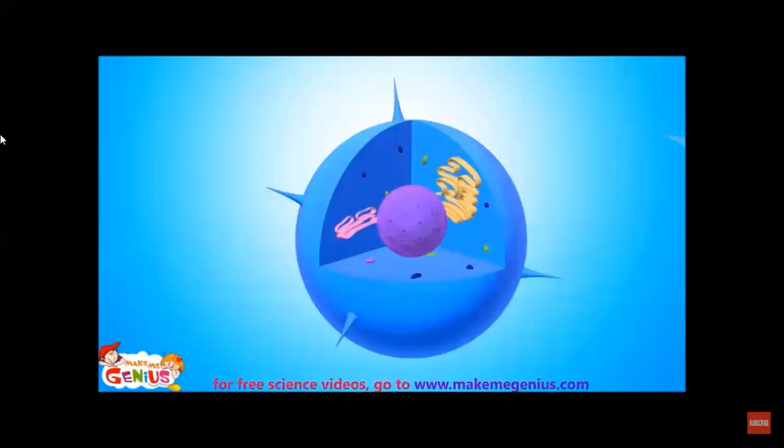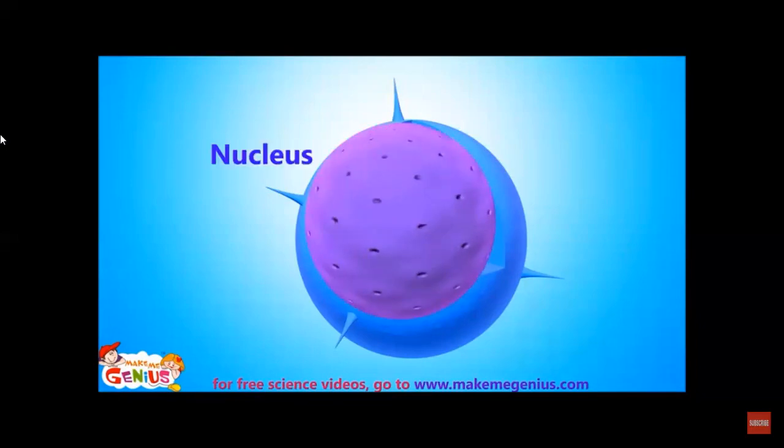The cell is filled with a jelly-like substance called cytoplasm. All organelles float in cytoplasm. Here is the nucleus. It is the control center of the cell. The nucleus has a membrane that has pores in it. These allow certain molecules to enter or leave the nucleus.